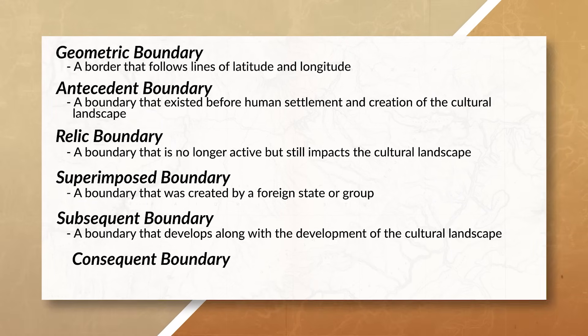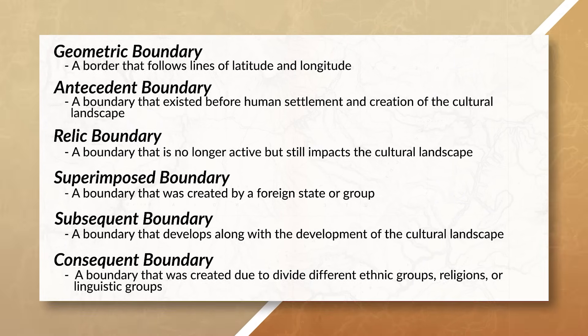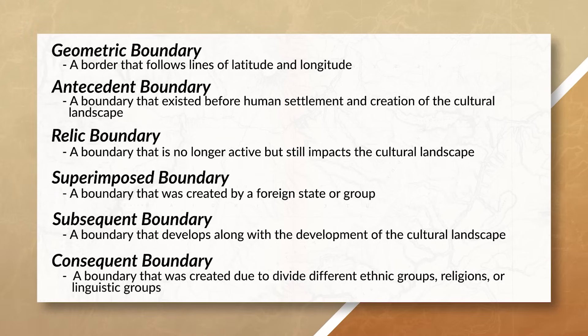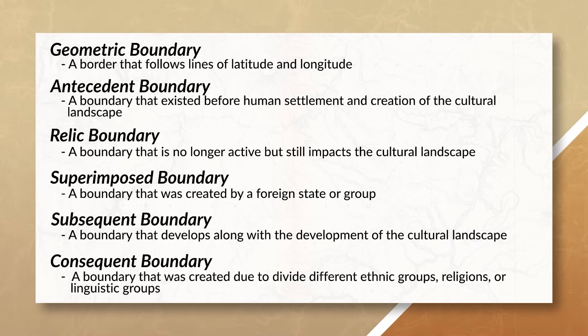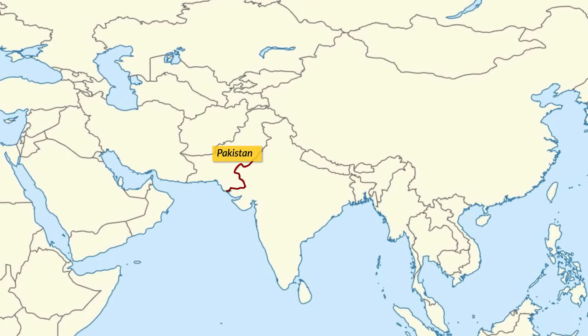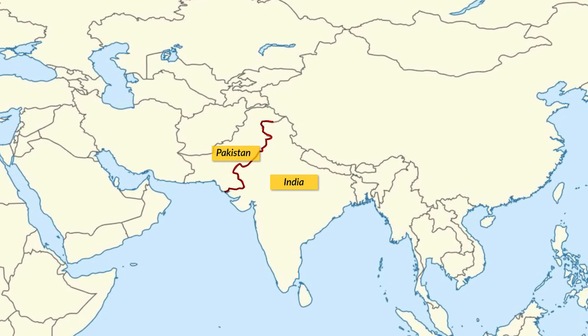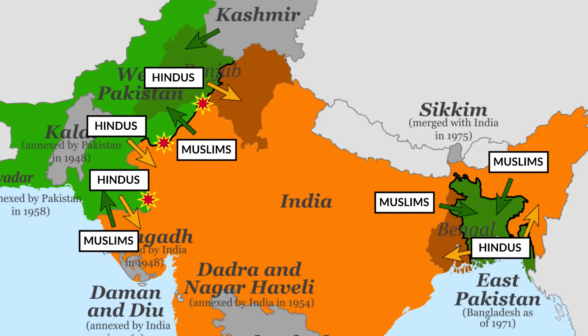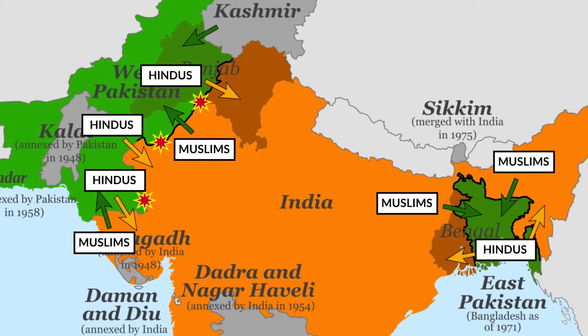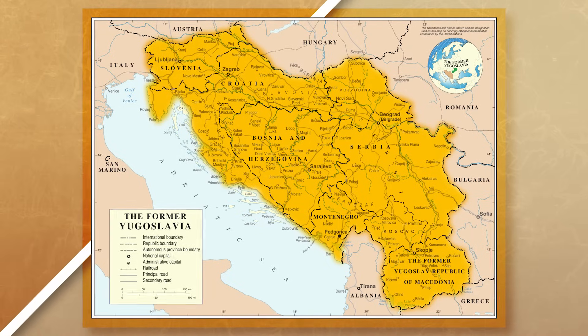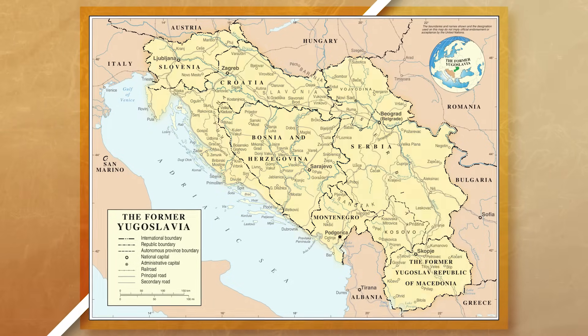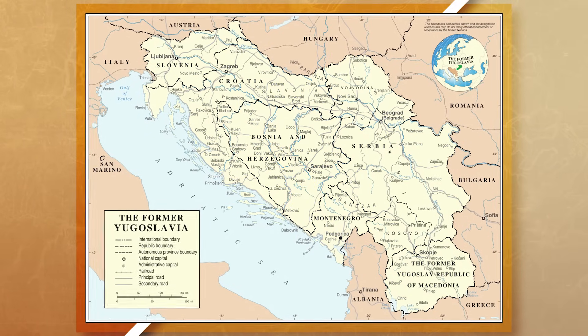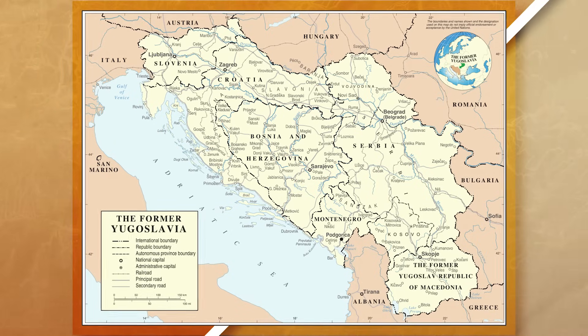Then there are consequent boundaries, which are seen as a type of subsequent boundary. Here, the boundary is created due to differences between different cultural groups. These boundaries are often created to divide different ethnic, religious, or linguistic groups. For example, the borders between Pakistan and India split because of religious differences — Hindus were supposed to go to India and Muslims to Pakistan. We could also look at boundaries created after the fall of Yugoslavia, where the newly formed states and boundaries were based off the different nations that existed in the area.